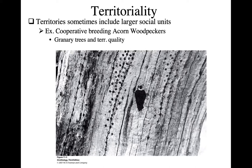Territories with many granary trees are very valuable. You see the establishment of larger social units typically occupied by the breeding pair and their offspring from previous breeding seasons. These individuals — called helpers — help feed their younger brothers and sisters. One reason they do this is that they help increase the reproductive success of their parents, and the greater the number of young brothers and sisters they help produce, that's indirectly helping their own fitness. Fitness is all about passing on as many copies of your genes as possible — either directly by producing your own offspring or by helping raise close relatives.